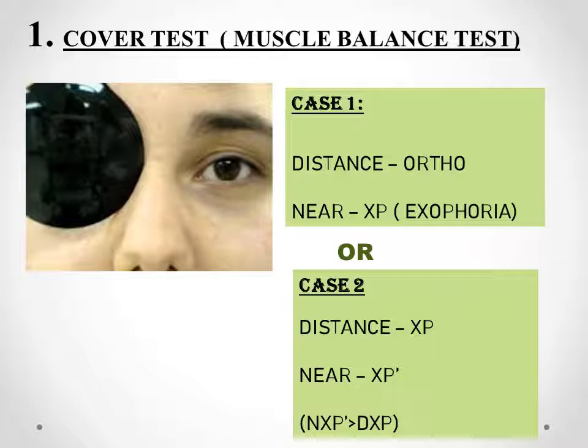In order to validate the presence of this anomaly, the first test that we perform is the cover test. When we perform the cover test in the presence of convergence insufficiency, we see that either the patient is orthophoric at distance and exophoric at near, or the patient is exophoric in both distance and near but the near exophoria is more than the distance one.